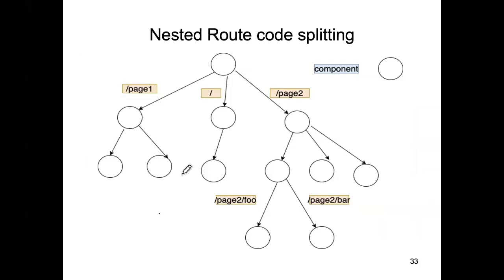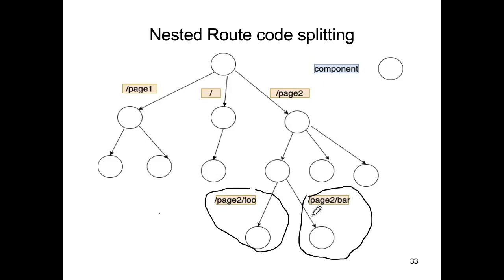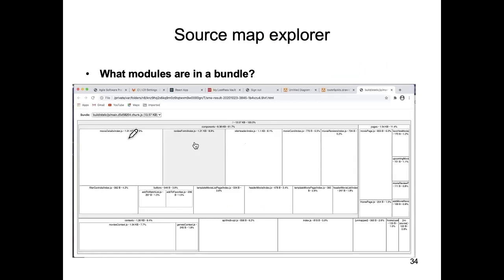You can also apply route-based code splitting to nested routes — for example, if page two has sub-routes foo and bar, each could have its own bundle, giving potentially five bundles total. To see what's actually inside a bundle, you use a tool called the source map explorer, which gives a visual representation of a bundle's contents.